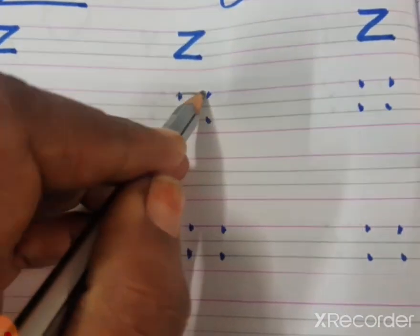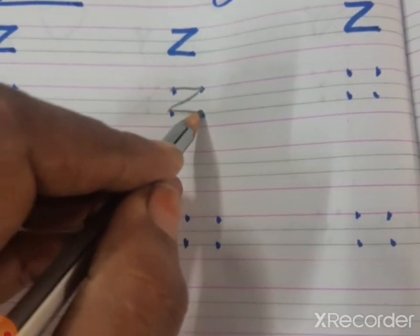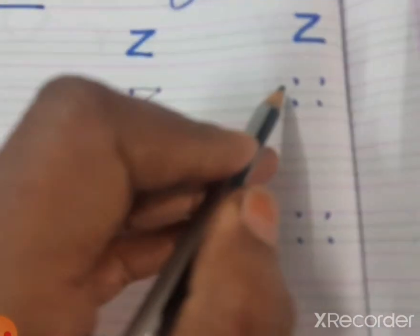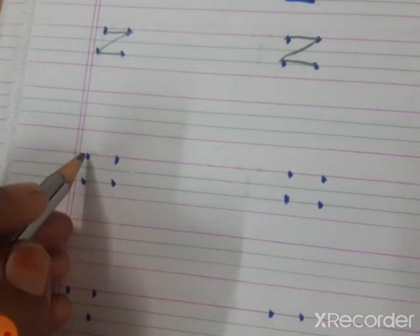First sleeping line. Then slanting line. Then sleeping line. Z for zebra. Slipping line. Slanting line. Slipping line. Z for zebra.